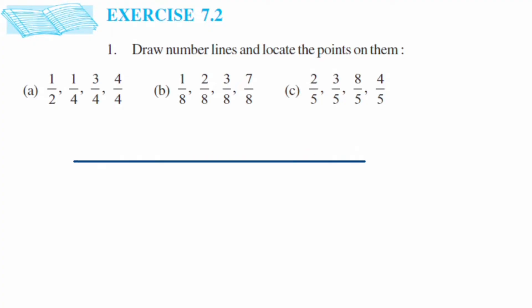Since I know this will lie between 0 and 1, I need to look at the denominator. For the first question, the denominator is 4, so I have to divide 0 and 1 into 4 equal parts. This is 0, then 1 equal part, 2, 3, and 4 — this is my 1. When dividing, count the equal parts, not the lines.